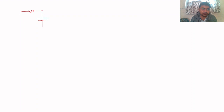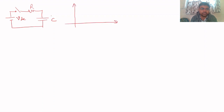In this video we have to understand the concept of the response of a series RC circuit when connected with a DC source. Exactly what will happen when you connect VDC across this RC — the voltage across the capacitor will gradually increase. So the capacitor voltage VC over time will gradually increase until it reaches the source voltage VDC.